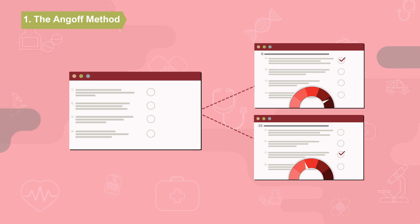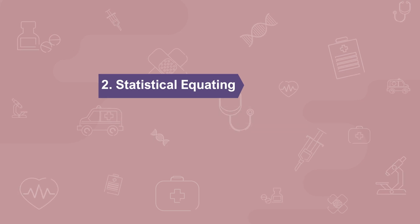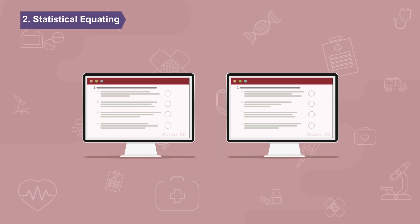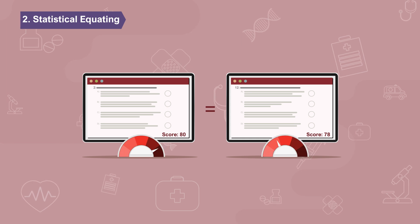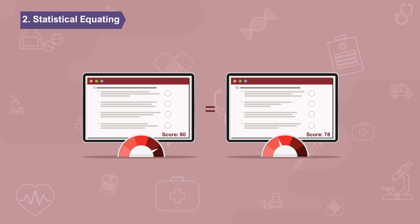Statistical equating is a process that allows scores from different examinations to be interpreted as equivalent even though one exam can be more or less difficult than another.